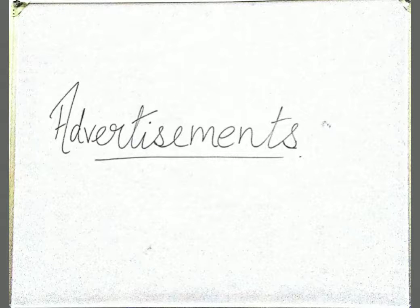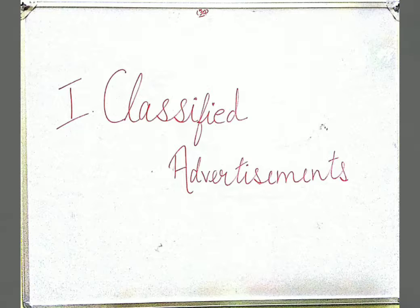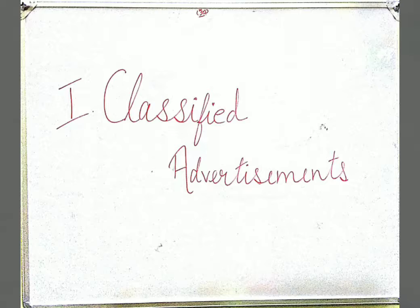Today's topic is also advertisements — it is a continuation of the previous video. First is classified advertisements. As I told you in the previous video, classified advertisements are brief, handwritten or printed. They are called classified because they are grouped into categories like matrimonial and situation vacant. They are chargeable according to per word, per column line, or per column centimeter.